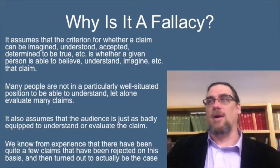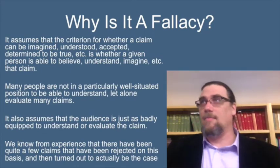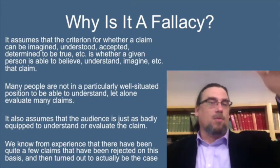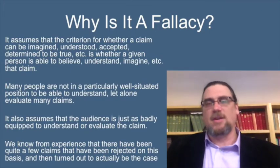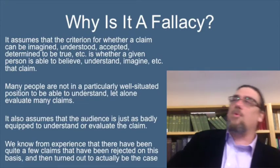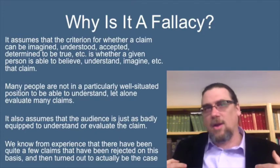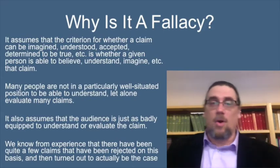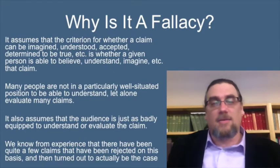People often think that they're smarter than they are. They did some really interesting studies and found that if we divide people into quartiles, people in the top 25% — the people who are really good — and the middle 50% often have a fairly decent understanding of how well they understand things. But people in the bottom 25% often think they're a lot smarter than they are. Another problem with this line of thinking is it assumes that the audience is just as badly equipped to understand or evaluate the claim — so because I find something difficult to buy, you should equally find it difficult to buy. And that may not be the case. We also know from experience that there have been a lot of claims rejected on this sort of basis that actually turned out to be true, so we should be a little skeptical of this kind of thing.